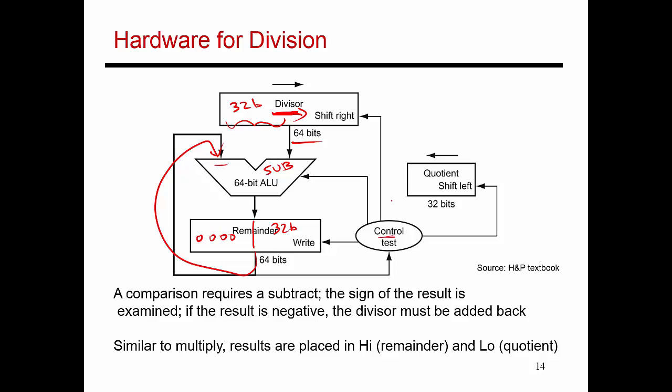And I check that result. If that comparison tells me this is a negative number, then I just ignore the subtraction that I just performed. So that's what controls this right input over here, saying that this new result either gets written into the remainder register or gets ignored. And then correspondingly, a 1 or a 0 gets shifted into the quotient.